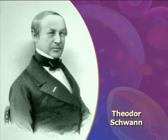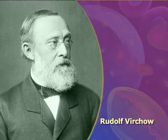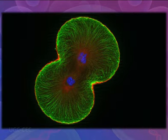By the early 1800s, scientists had observed the cells of many different organisms. These observations led two German scientists, Theodor Schwann and Matthias Jacob Schleiden, to propose that cells are the basic building blocks of all living things. Around 1850, a German doctor named Rudolf Virchow was studying cells under a microscope when he saw them dividing and forming new cells. He realized that living cells produce new cells through division, and proposed that living cells arise only from other living cells.